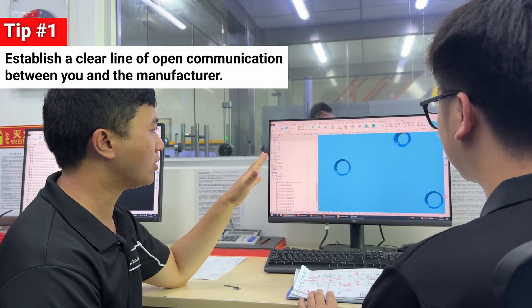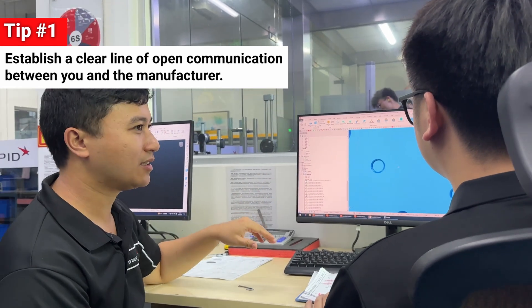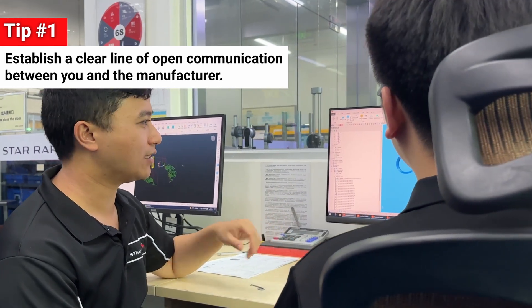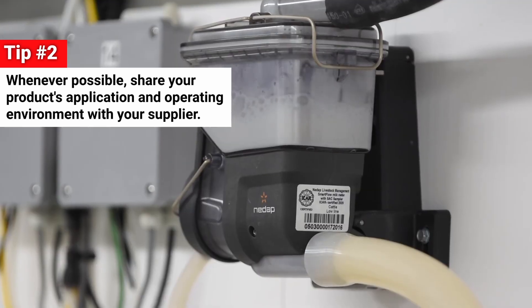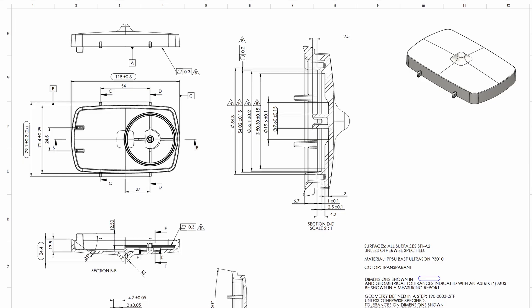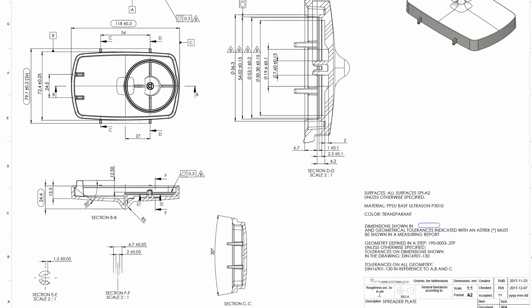As with every project, it's most important to first establish a clear line of open communication between ourselves and the client. We always need to know what the product is meant to do and in what environment. This information is essential if we want to perform a design review that helps them achieve their goals in the most efficient way possible.